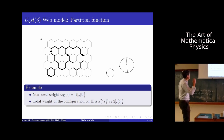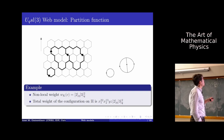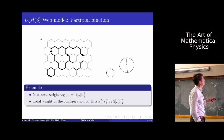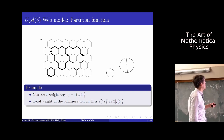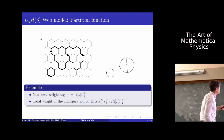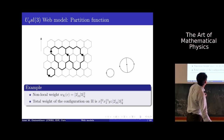Here is an example. For this configuration, first I calculate the non-local Kuperberg weight. I have a loop contributing quantum number [3], and I use the digon rule on the theta-graph part — replacing it by a line times quantum number [2] — and then a remaining loop, giving [3]² in the end. For the total local weight: there are 22 bonds pointing up, 13 bonds pointing down, and one sink-source vertex pair, giving a factor of y·z. This is the statistical weight of this configuration.